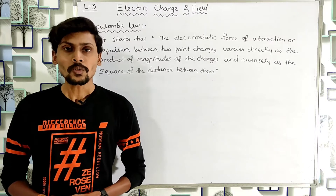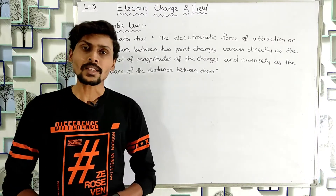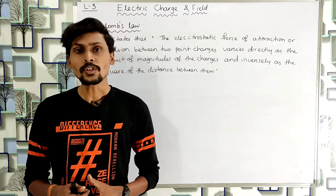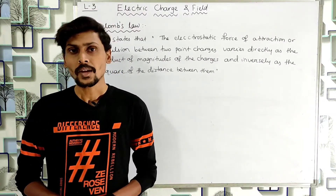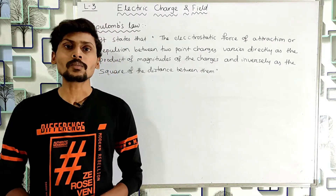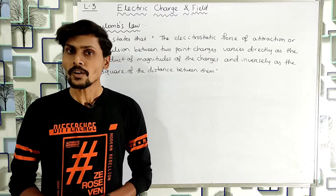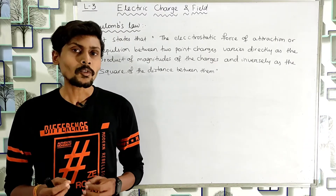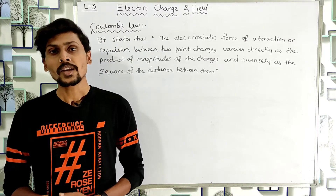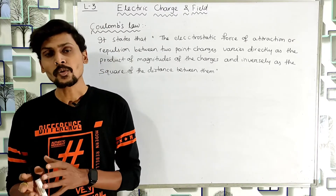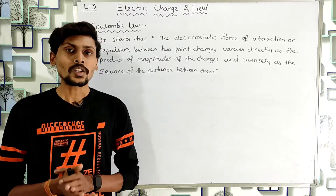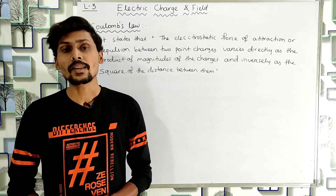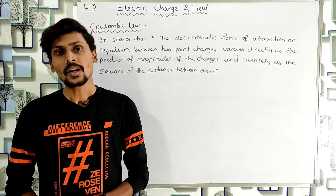In class 11 we discussed about Newton's law of gravitation, which helps us to calculate the force of gravitation between two bodies or between two masses. It states that the force of gravitation between two masses is directly proportional to the product of their masses and inversely proportional to the square of the distance between them. The mathematical formula is F = G × m1 × m2 / r², where G is the universal gravitational constant with value 6.67 × 10⁻¹¹ N·m²/kg².